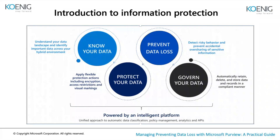Once you know your data, you move to the next stage: 'Protect Your Data.' Here we deal with encryption — how to configure encryption, control access, and add visual markings to sensitive or confidential data. In Microsoft 365 we use sensitivity labels, where you configure encryption, access control, and visual markings under information protection.